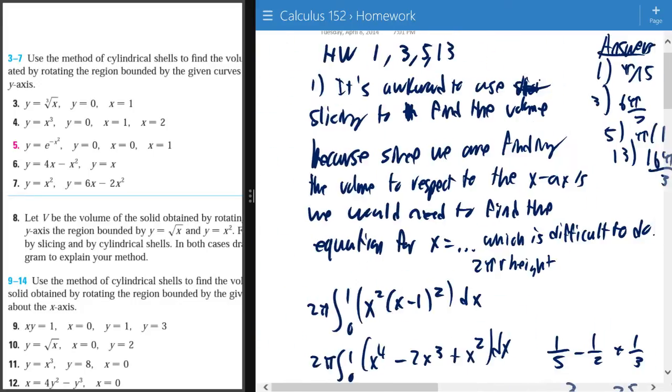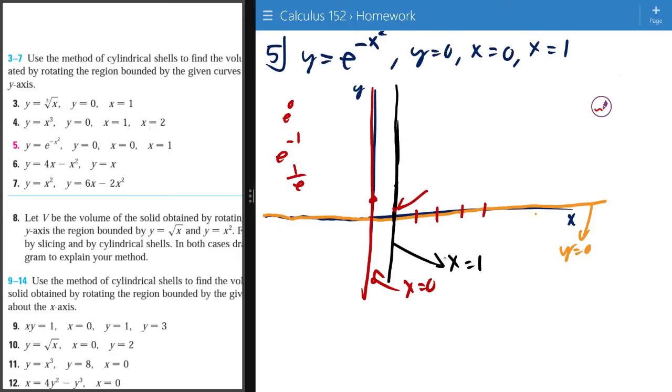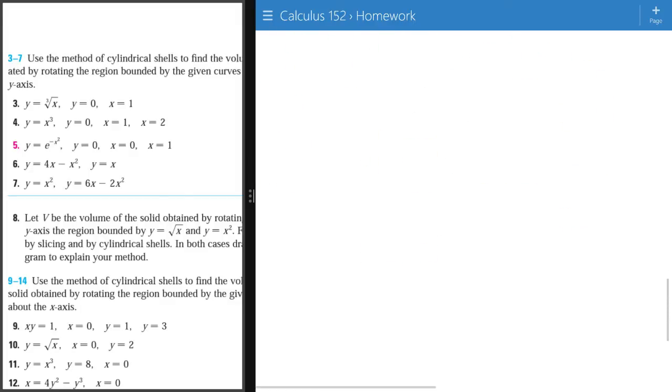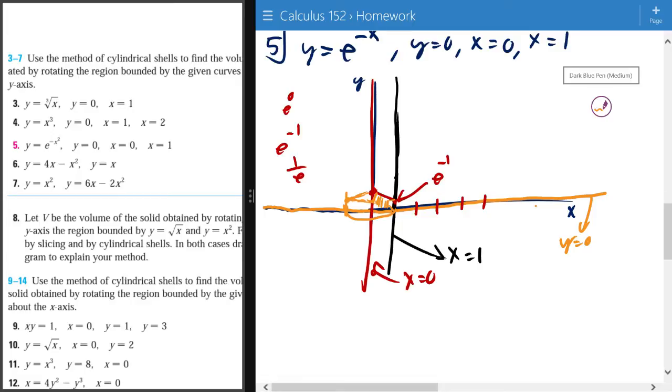I will just call this e negative one. So now we know our region is going to be this little area right here. And then it revolves around the y-axis, so we have to make another one here. So this is about good, and it's going to be like this.